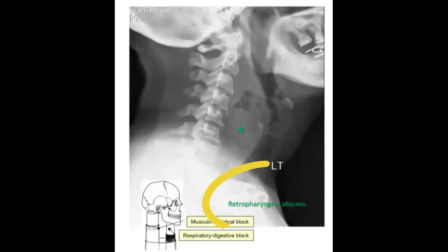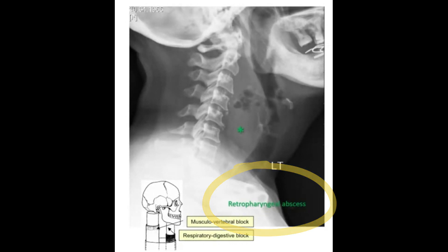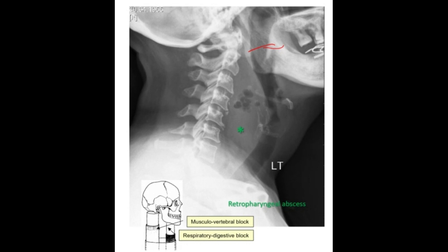The retropharyngeal space can expand when there is infection, which could be an upper respiratory tract infection that spreads to that region, or sometimes the infection can spread from the teeth as well. This will cause what we call a retropharyngeal abscess, and this retropharyngeal abscess is dangerous.